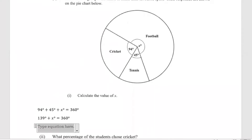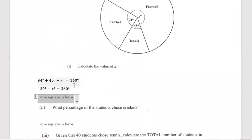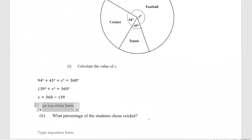What we'll do is subtract 139 from both sides of the equation. Since it's positive here, when we carry it across the equal sign, it will become negative. So what we'll have is X is equal to 360 degrees minus 139. And when you do that, X is equal to 221 degrees. So it will be 221 degrees for the value of X.